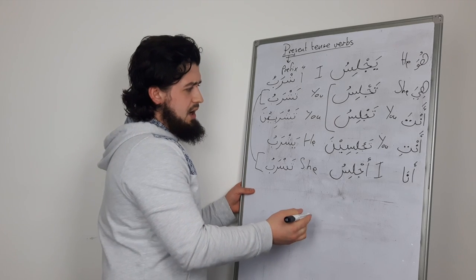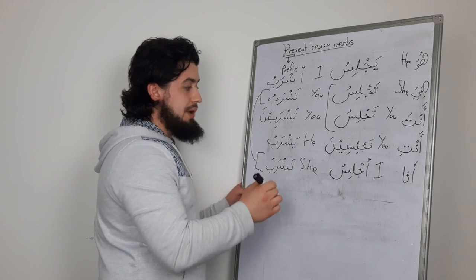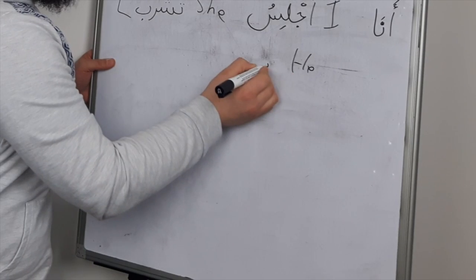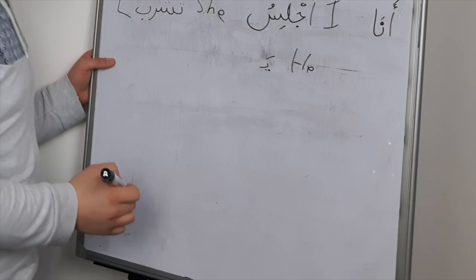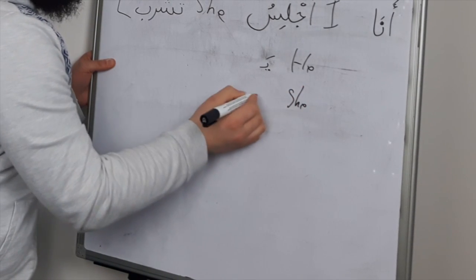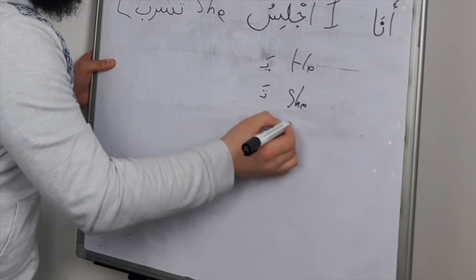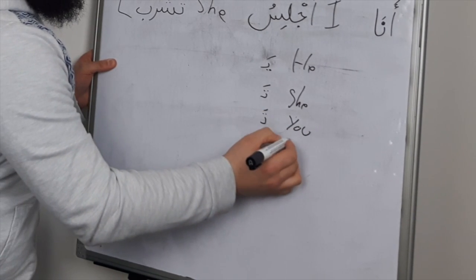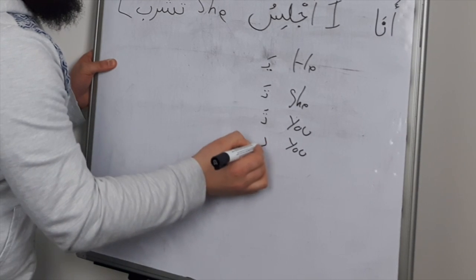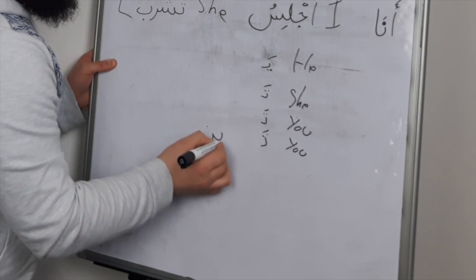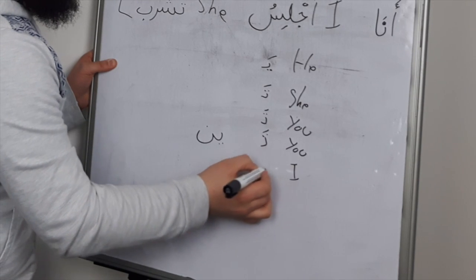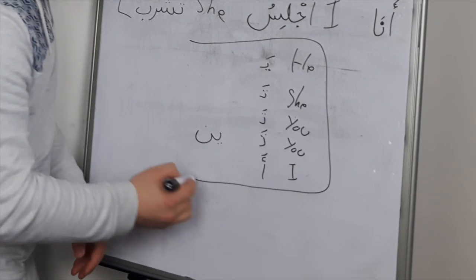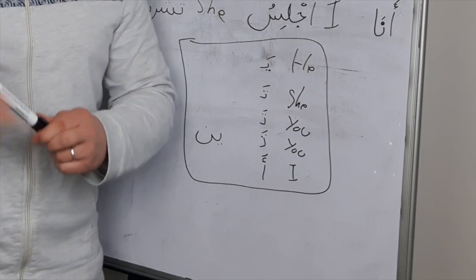So, actually, down here, I'll write these out, but only with the prefixes. So, the he just has a ya on the beginning. That's the prefix. The she has a ta on the beginning. The you, masculine, has a ta on the beginning. The you, feminine, has a ta on the beginning. But then, also an ina on the end. And then, the I has an a on the beginning. Those are the prefixes and the suffixes that you use for the present tense verbs.